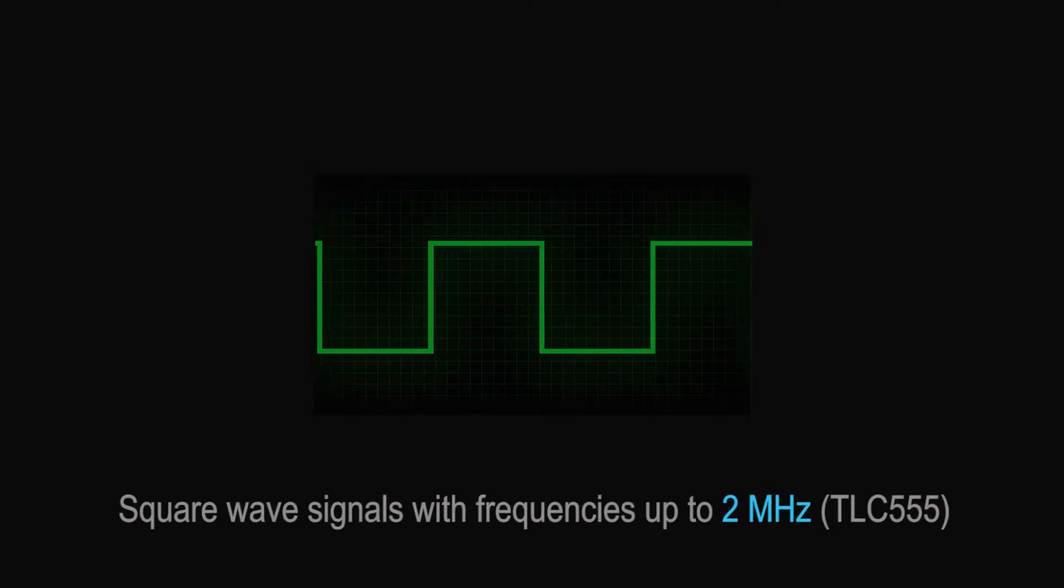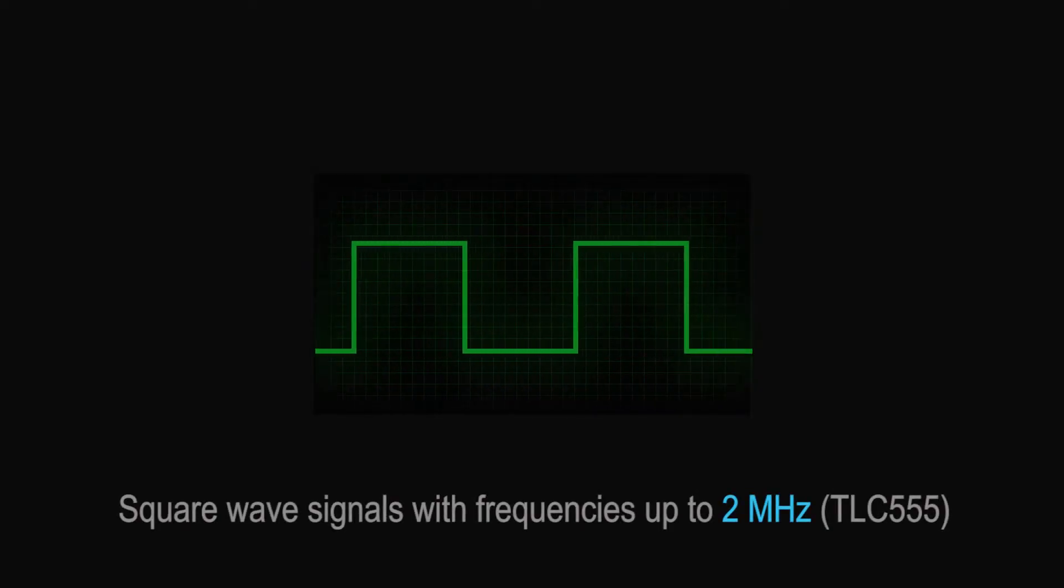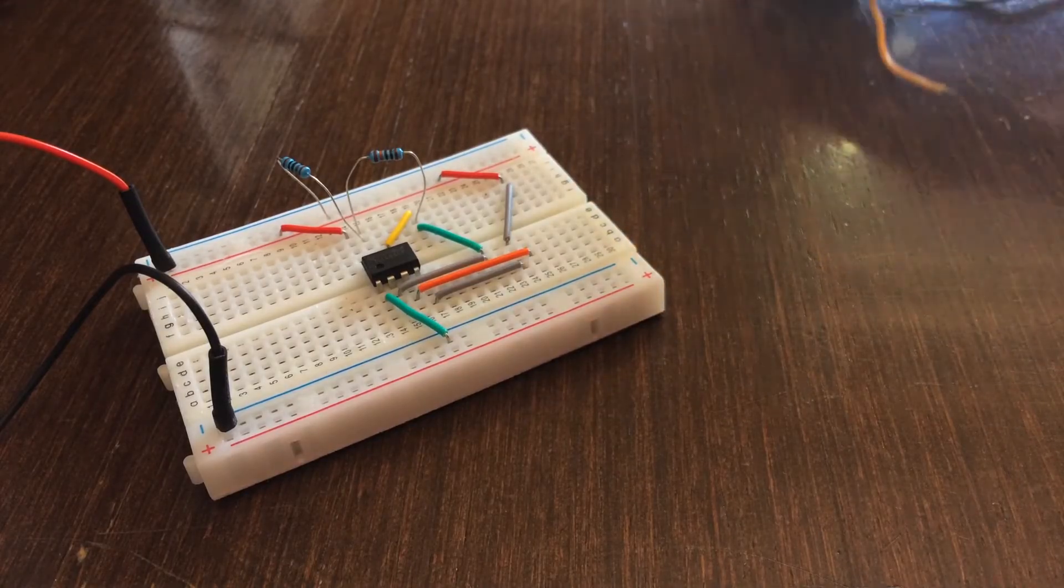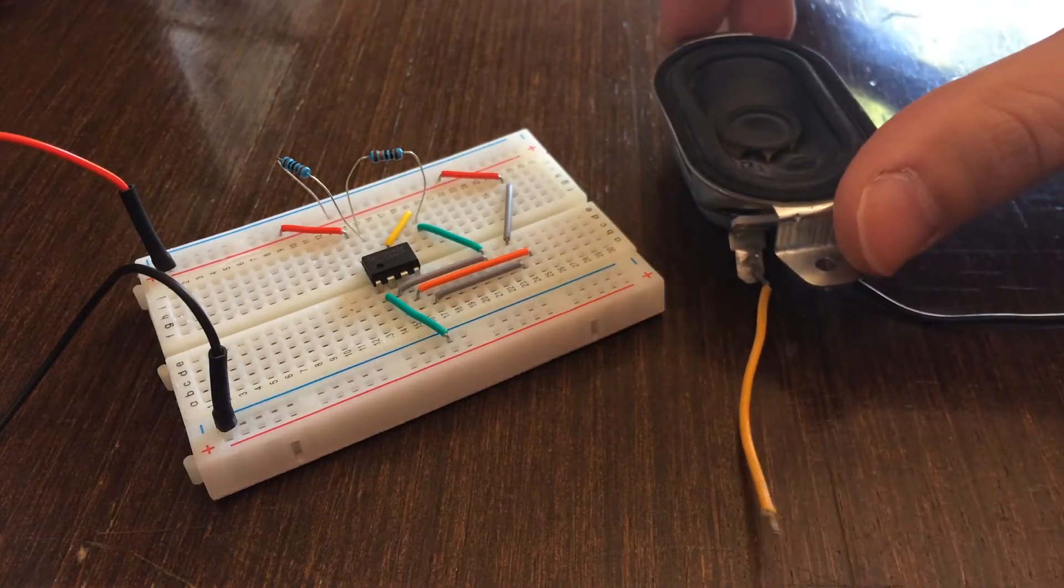You can generate square wave signals with TLC555 up to 2 MHz. Simply use capacitor in nF or pF range in order to get higher frequencies.